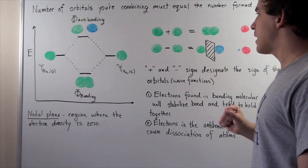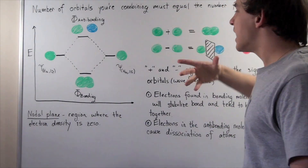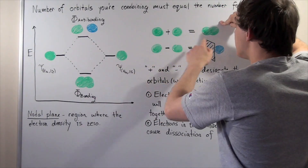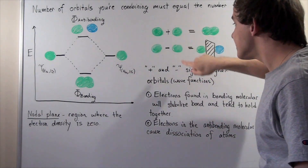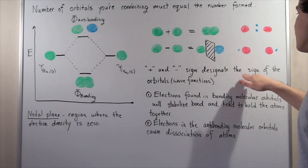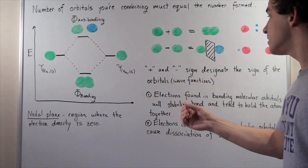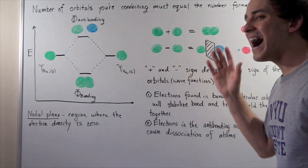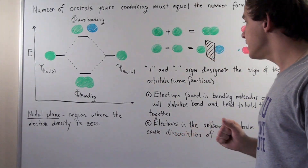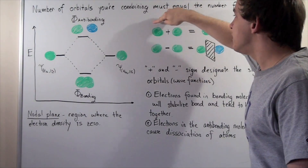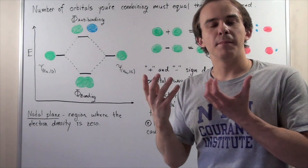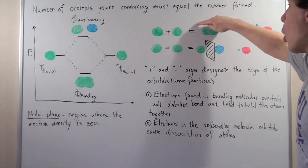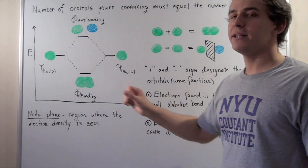Here we have the combination of two atomic orbitals to form our phi-bonding molecular orbital. The positive and negative signs designate the sign of the orbitals. Orbitals are simply wave functions, so these signs represent the sign of the wave functions — they do not represent charge. When we combine two 1s orbitals of the same sign, we form an overlapping molecular orbital called the bonding molecular orbital.